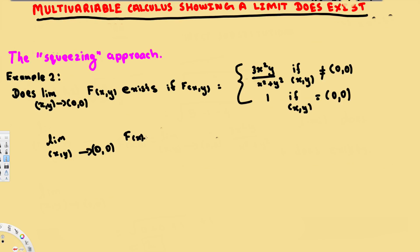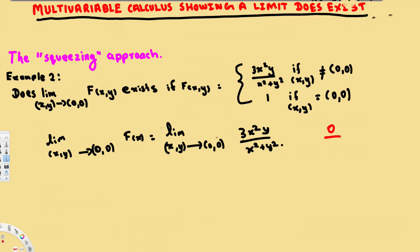The function f(x,y) is going to be evaluated as the limit as (x,y) approaches (0,0) of 3x²y over x²+y². If you plug in zero, you can see that we get a 0/0 condition. In a multivariable function we cannot use L'Hôpital's rule, so in this case we are going to use the squeezing approach.